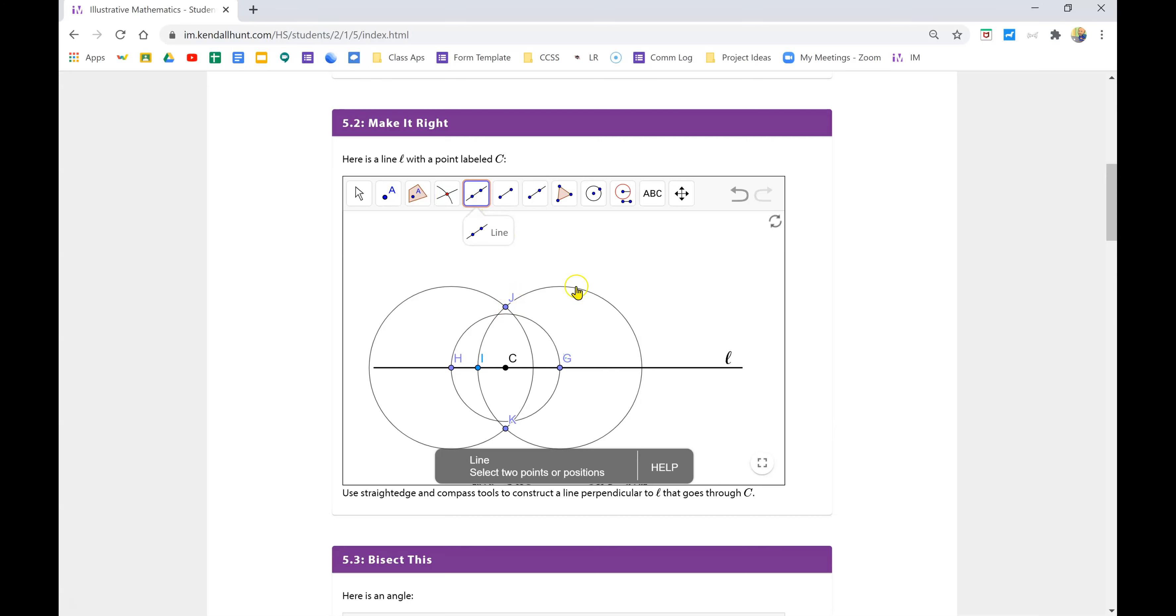Now, if you use the intersect tool and get actual points, then when you go to draw the line, it snaps easily at this point J. Click and then drag down to K and it will just snap right on there and click. That line that I just drew is a perpendicular bisector that goes through point C.